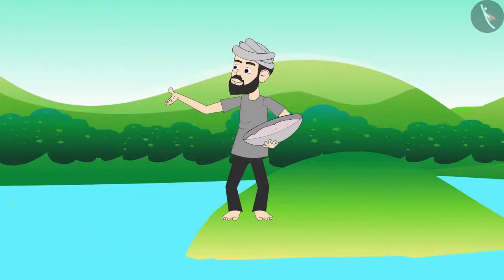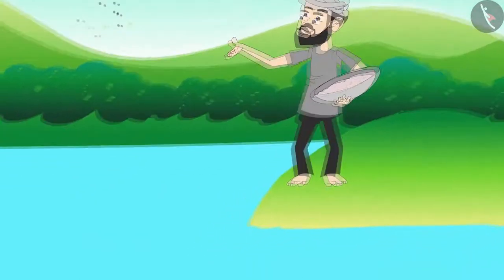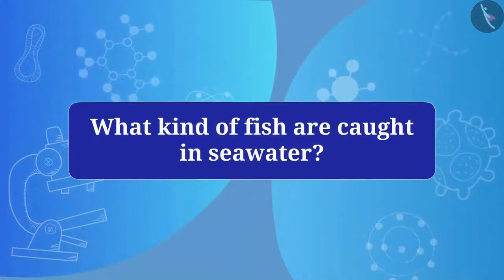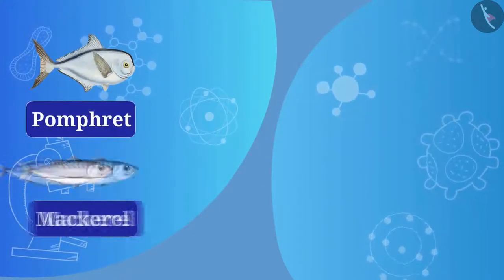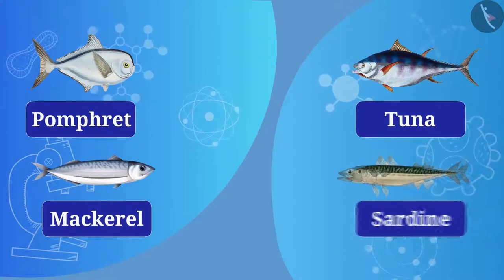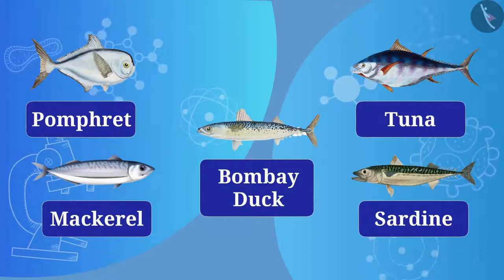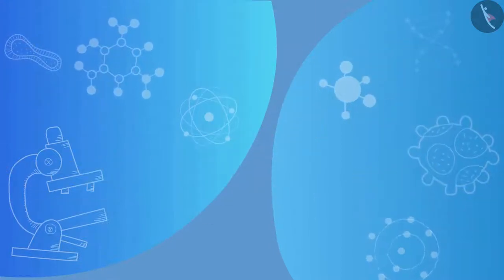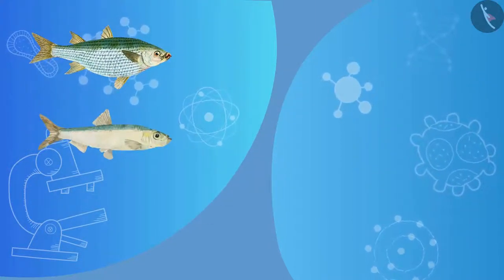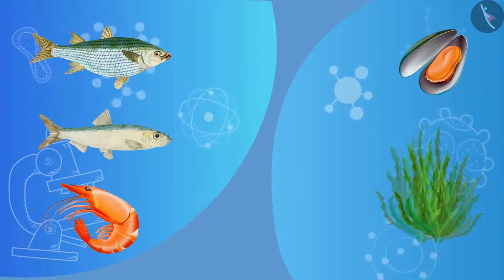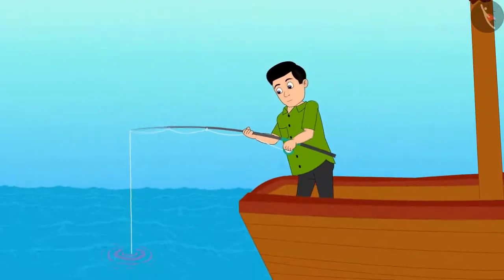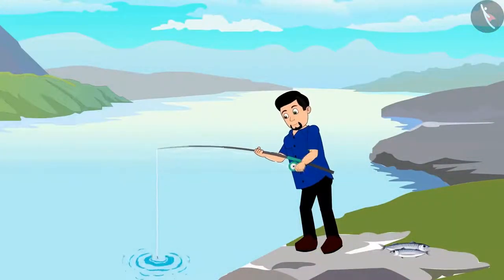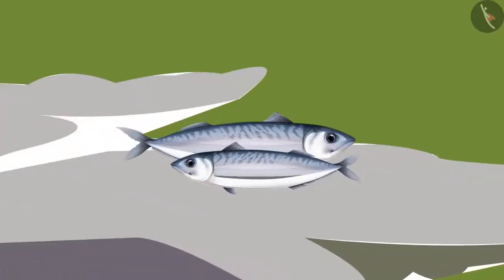Fish like pomfret, mackerel, tuna, sardine, and Bombay duck are caught in the sea. Marine fish of high economic value such as mullet, Bhetki, prawns, mussels, and seaweed are also cultivated in seawater. Fish are also caught from canals, ponds, reservoirs, and rivers, but the yield is very low — so in these cases, fish culture is done.